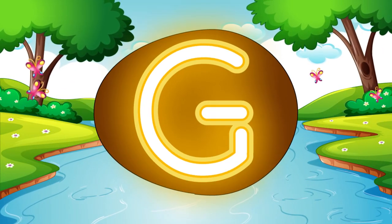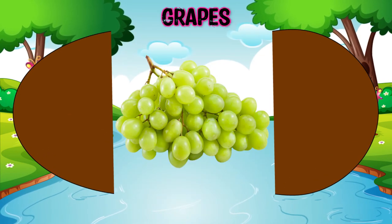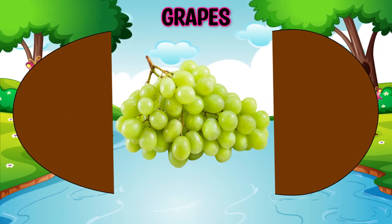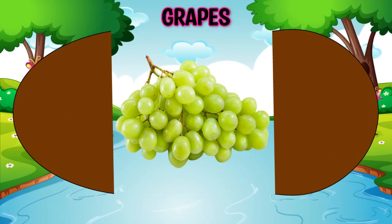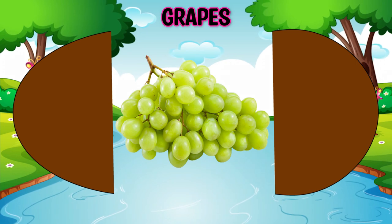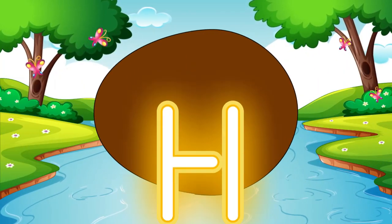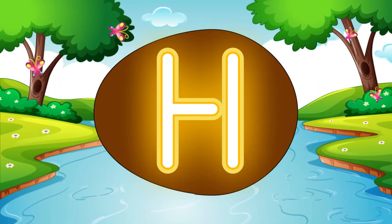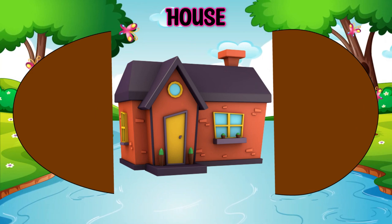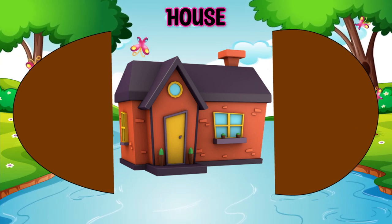G is for G-G-Grapes, G-G-Grapes. H is for H-H-House, H-H-House.